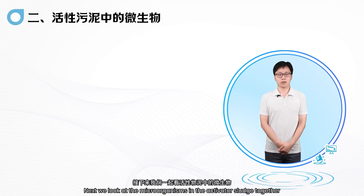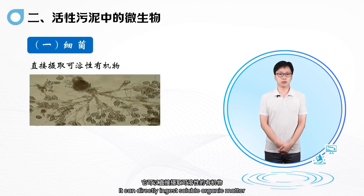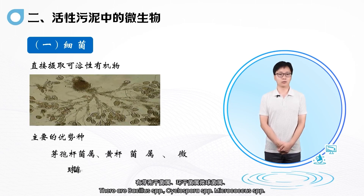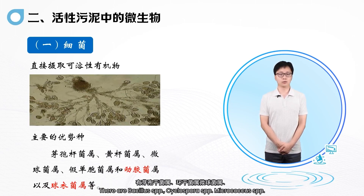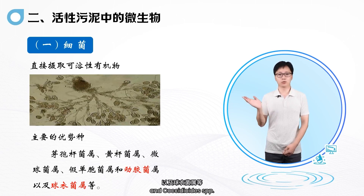Next, let's look at the microorganisms in activated sludge. The first part is bacteria, which can directly ingest soluble organic matter and break down organic matter. The main advantageous species include Bacillus spp., Cyclospora spp., Micrococcus spp., Pseudomonas, Actinomycetes, and Coccidioides spp.